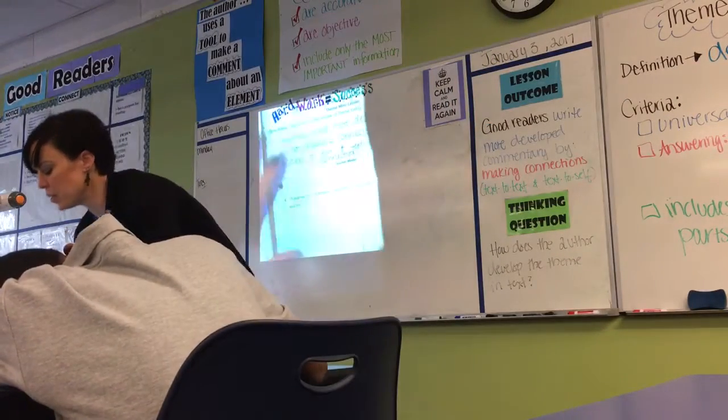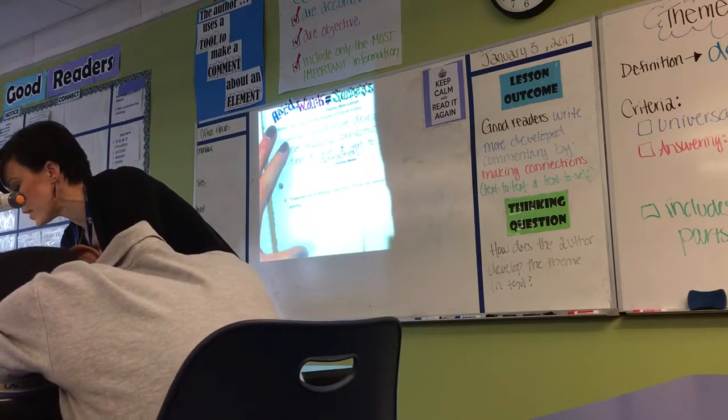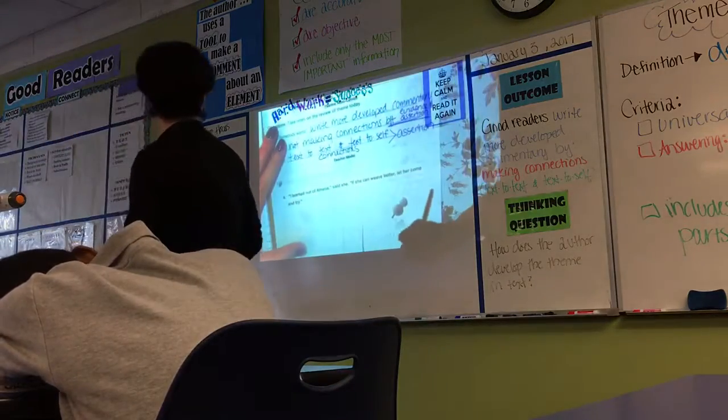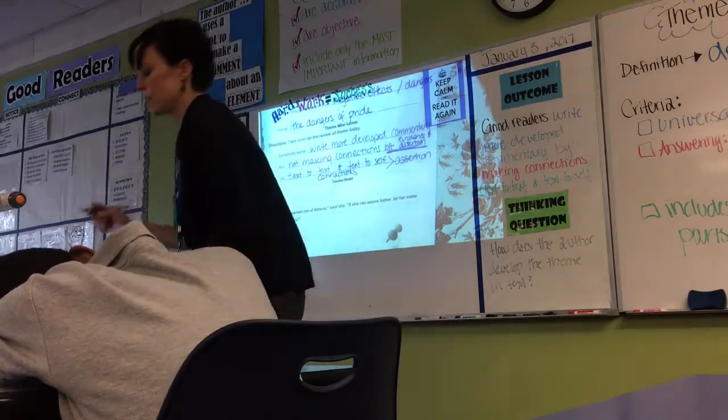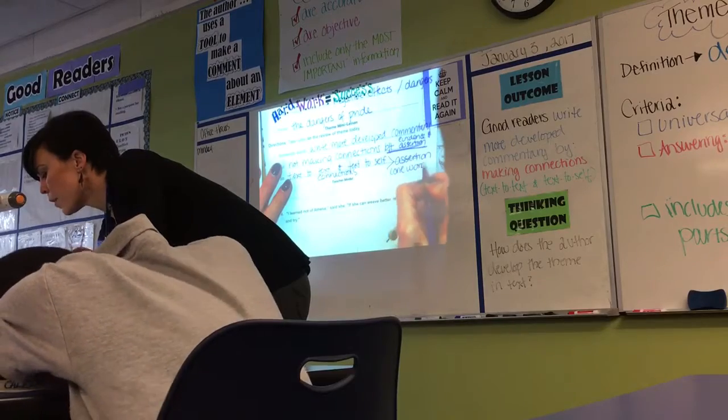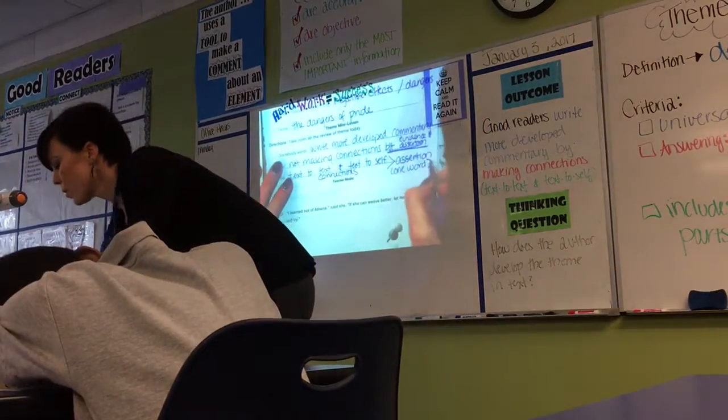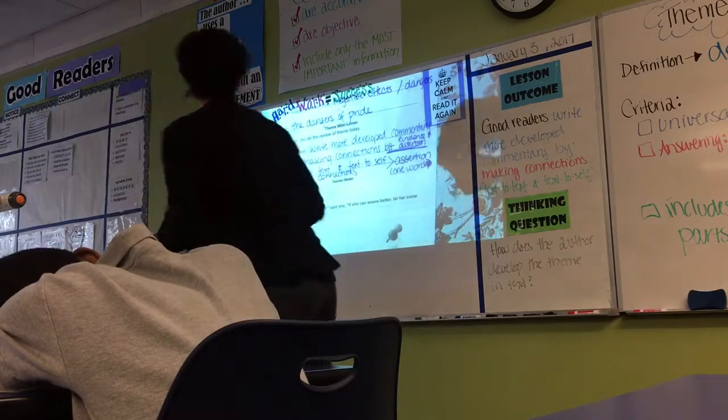And then, what I want you to do, you have to make those connections, you have to tie them to your assertion. So, I want you to write that here. In order to prove that you did that, you have to use at least one word from your assertion. One word from your assertion in your commentary.